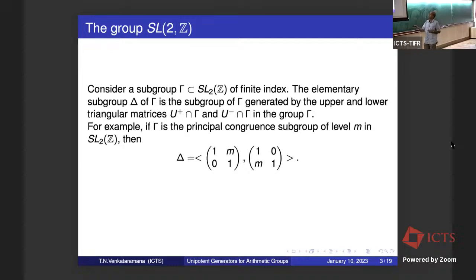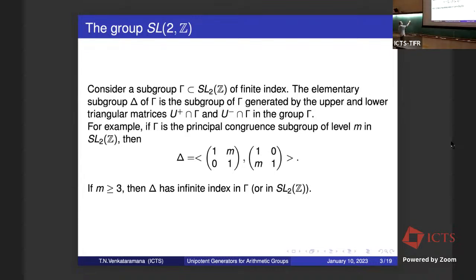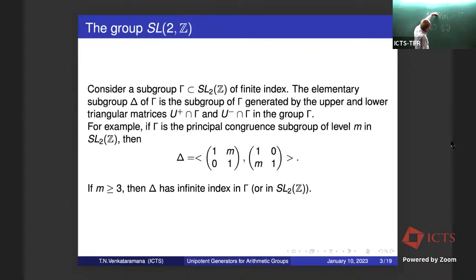So it's clear that the upper triangular matrices in this group are just {1 M; 0 1}. The issue is whether groups like this can have finite index. As one knows, if M is greater than or equal to 3, then this delta has infinite index in Γ. You look at the boundary on the upper half plane, P¹(ℝ). These two elements play ping-pong on P¹(ℝ), with attracting points at infinity and zero. On a large open set in P¹(ℝ), the group generated by this operates properly discontinuously, and therefore this cannot have finite index — it cannot be a lattice.